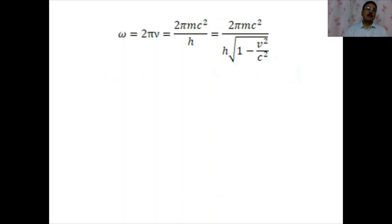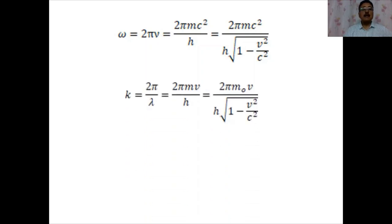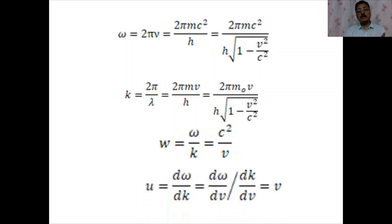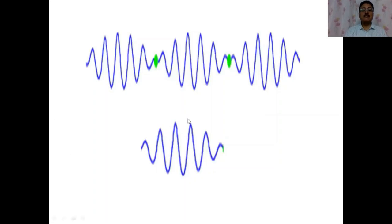Now revisiting wave speed and group speed: ω = 2πν = 2πmc²/h, where m = m₀/√(1 − v²/c²). Similarly k = 2π/λ = 2πm·v/h. The phase speed w = ω/k = c²/v, which can exceed the speed of light. But differentiating to get dω/dk gives the group speed u = v, the speed of the particle. So the wave group travels at exactly the same speed as the particle, and the particle is located somewhere within the wave packet.